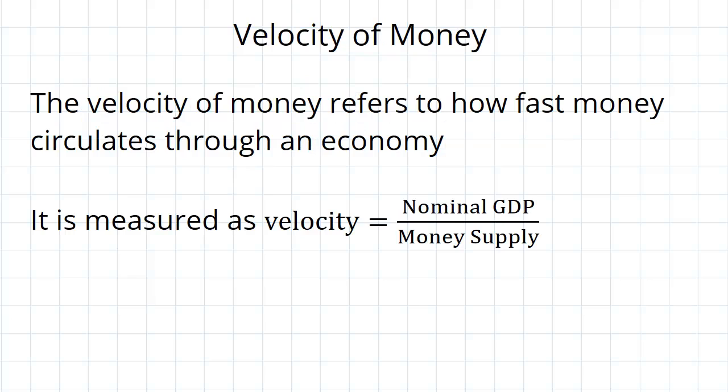So velocity is a measure of how fast money is circulating through the economy and we measure it as velocity equals nominal GDP divided by the money supply. Or equivalently we can say that v for velocity equals the price level times real GDP which will give you nominal GDP divided by m for money supply.